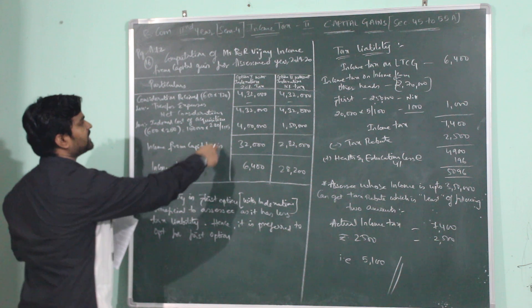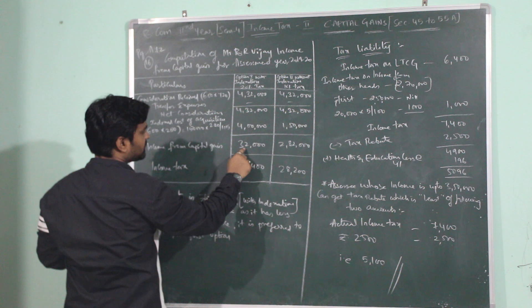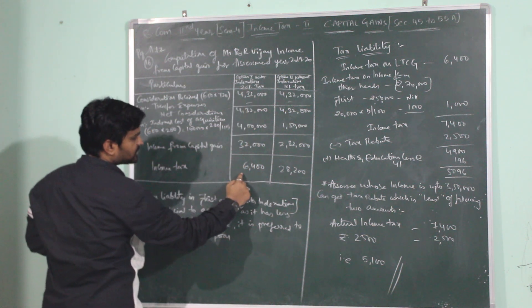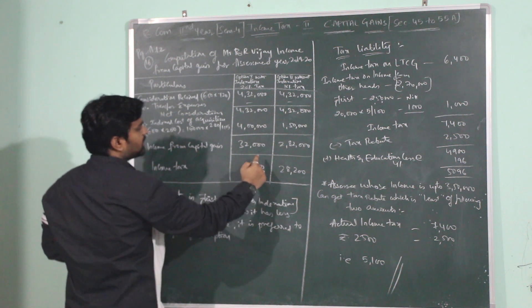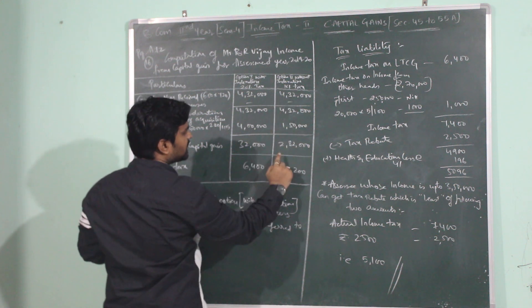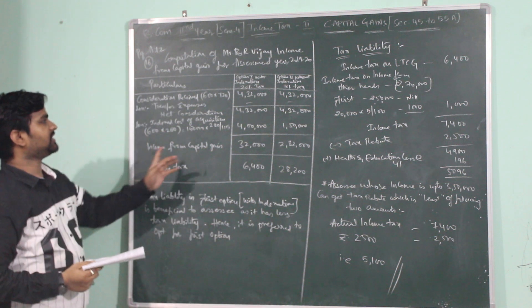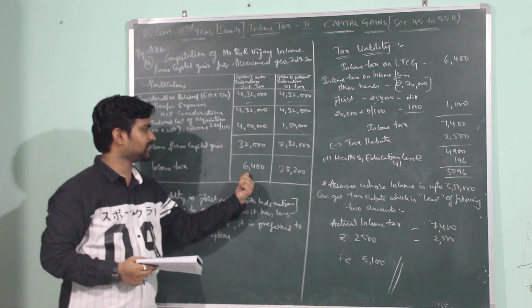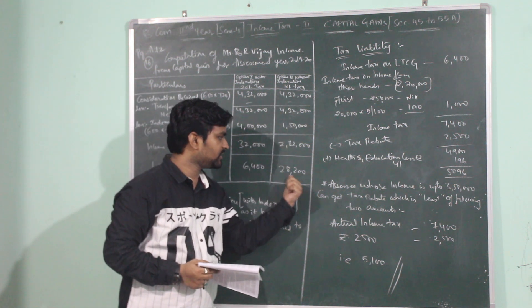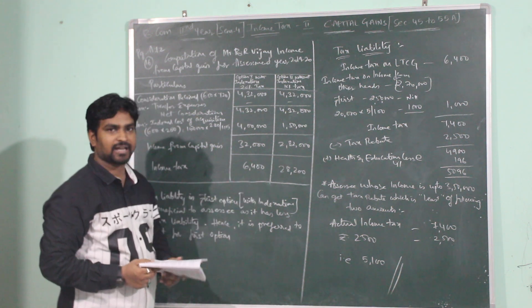Option 1 with indexation: income is 32,000, taxed at 20%, which works out to be 6,400. Option 2 without indexation: income is 2,82,000, taxed at 10%, which is 28,200. If the assessor is going with option 1, he is liable to pay income tax of 6,400. If the assessor is going with option 2, he is liable to pay income tax of 28,200.